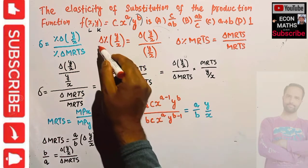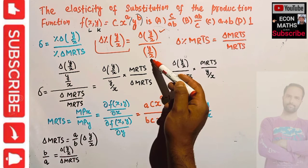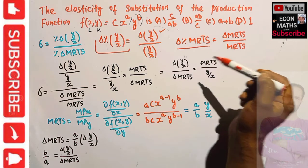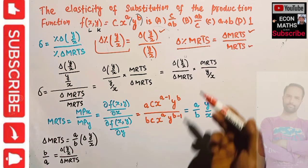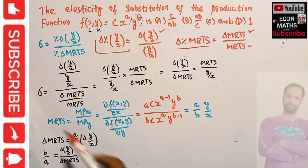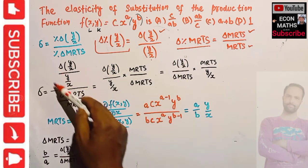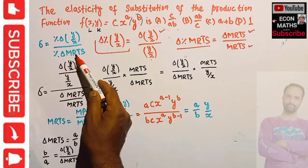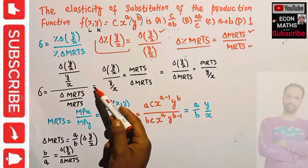Percentage change in capital-labor ratio equals the change in capital-labor ratio divided by its initial value. Similarly, percentage change in MRTS equals the change in MRTS divided by the initial MRTS. So elasticity of substitution equals: change in capital-labor ratio divided by initial capital-labor ratio, divided by change in MRTS divided by initial MRTS.